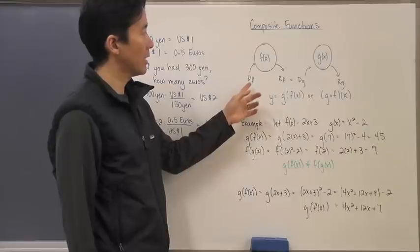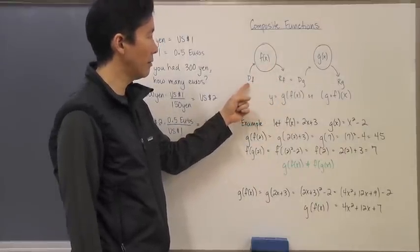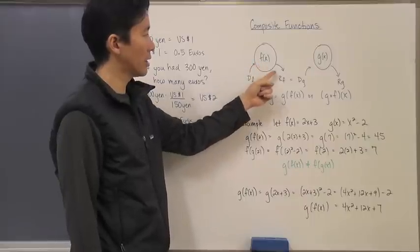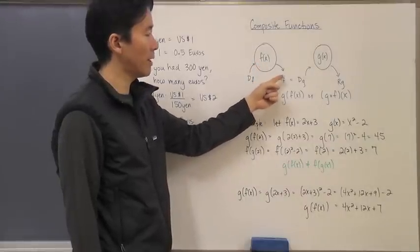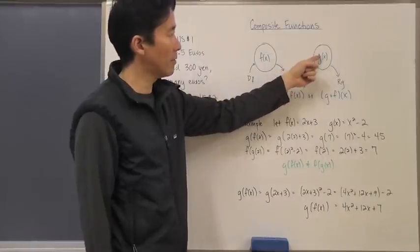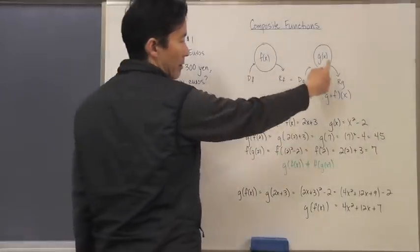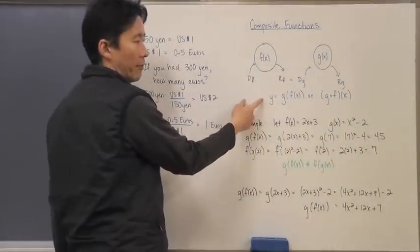If I take the composite functions, I take a domain value, put it into the function, come up with a range value. That range value will then become the domain value of the other function, put it into that function there, and then come up with a final range value. This schematic here is representative of this.